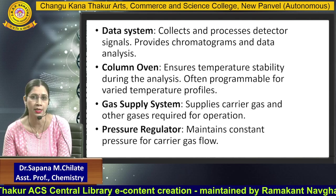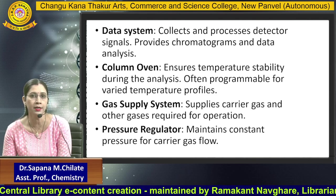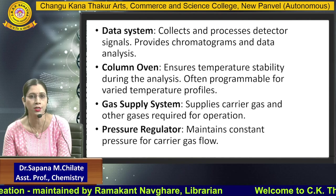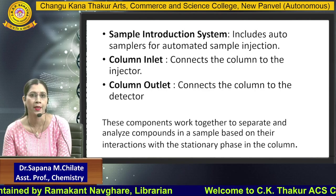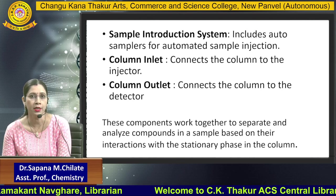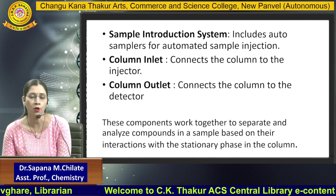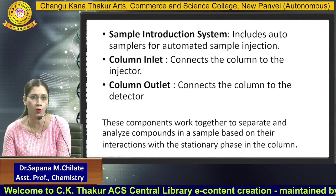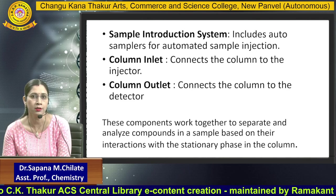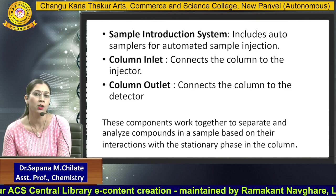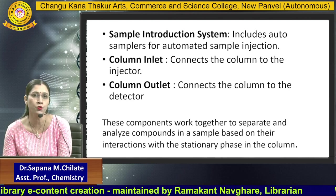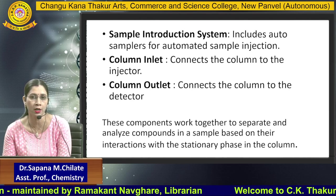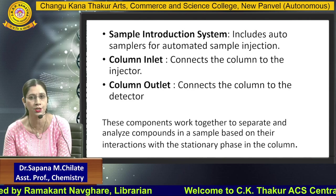The gas supply system supplies the carrier gas throughout the operation. A pressure regulator maintains a constant pressure flow throughout the system. The sample introduction system includes an auto-sampler or manual injection — the sample should be vaporized and then passed through the column. The column inlet connects to the injector and the column outlet leads to the detector. These are the different components that separate and analyze the components of a sample based on their interaction with the stationary phase in the column.